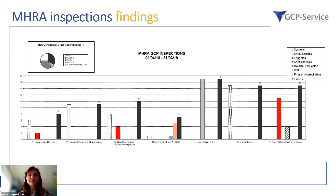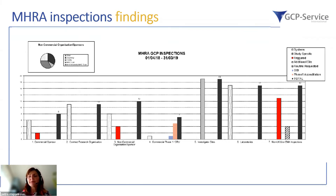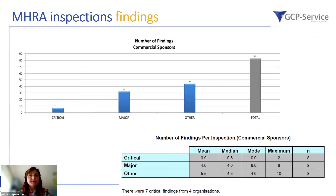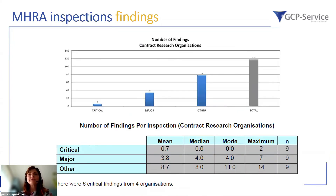Some overviews from the report show that the red columns represent triggered inspections performed by MHRA. These triggered inspections occurred at commercial sponsors, non-commercial sponsor organizations, and also outside the UK as part of EMA inspections. For commercial sponsors, there were seven critical findings from four organizations. Similarly, for CROs, there were six critical findings from four organizations.